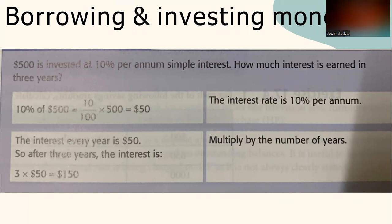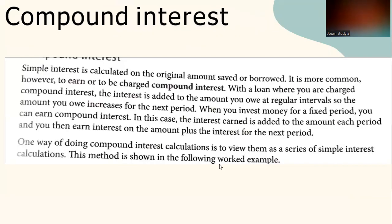Compound interest: unlike simple interest, which is calculated only on the original amount, compound interest is more common for loans and investments. With compound interest, the interest is added to the amount owed at regular intervals, so the amount increases each period. When you invest money, the interest earned is added to the principal each period, and you then earn interest on the principal plus the accumulated interest for the next period. One way to calculate compound interest is to treat it as a series of simple interest calculations.